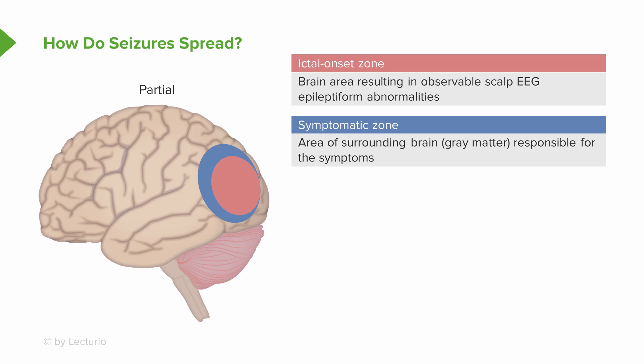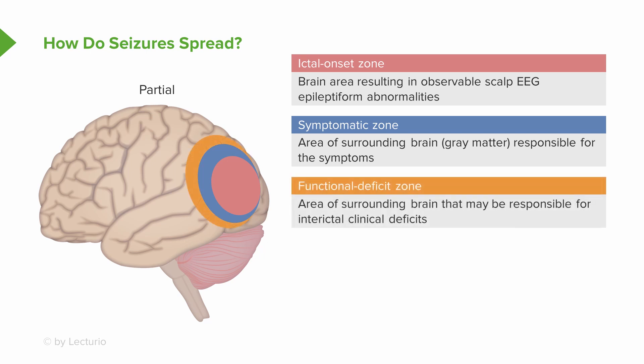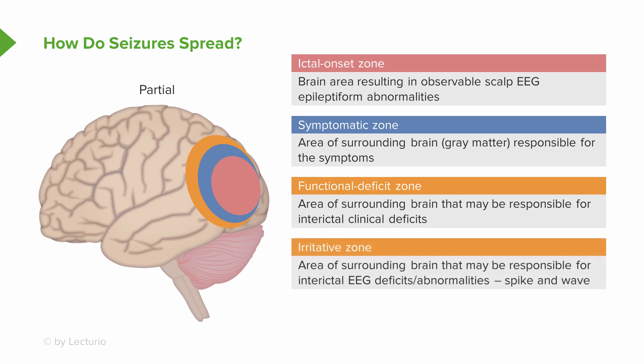What we ask patients about is what they experience when describing their aura. This is surrounded by the functional deficit zone — the area of surrounding brain that may be responsible for interictal clinical deficits, not the deficits during the seizure, but the findings between seizures. Similarly, this is also the territory we call the irritative zone, the area of surrounding brain responsible for interictal EEG discharges — the spikes and waves we look for between seizures. We know that the area where the spike is coming from is a little bit bigger than where the seizure itself started.